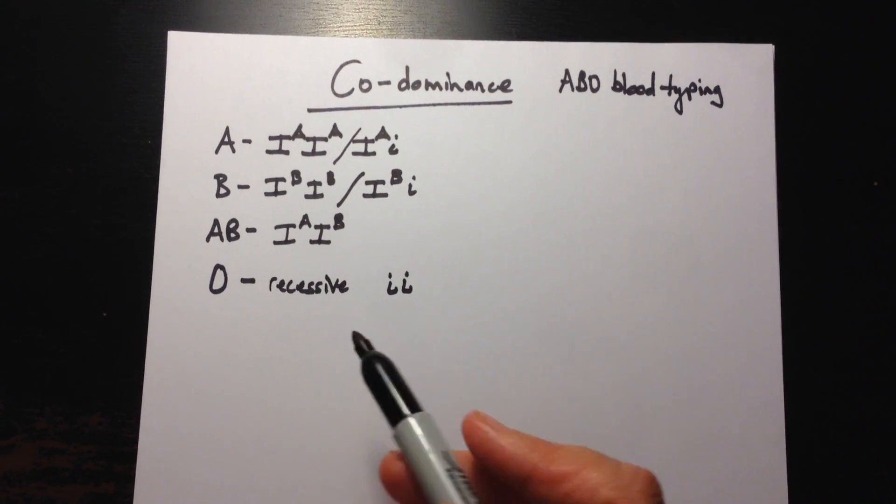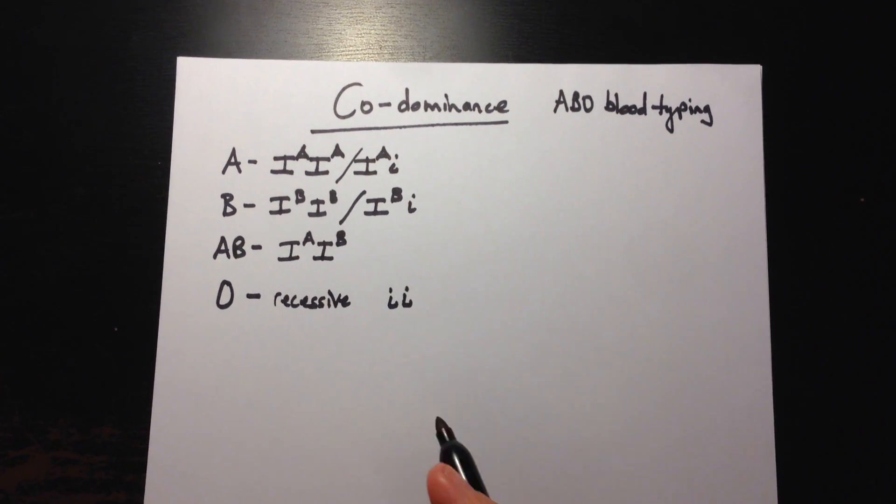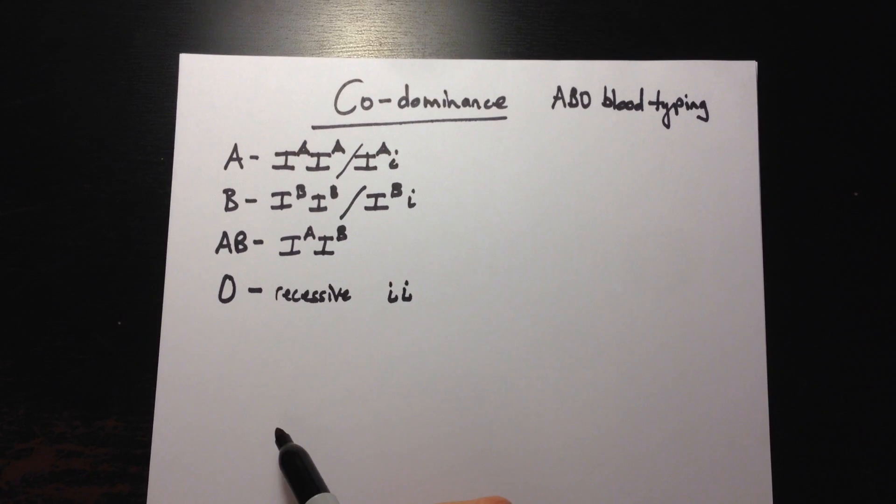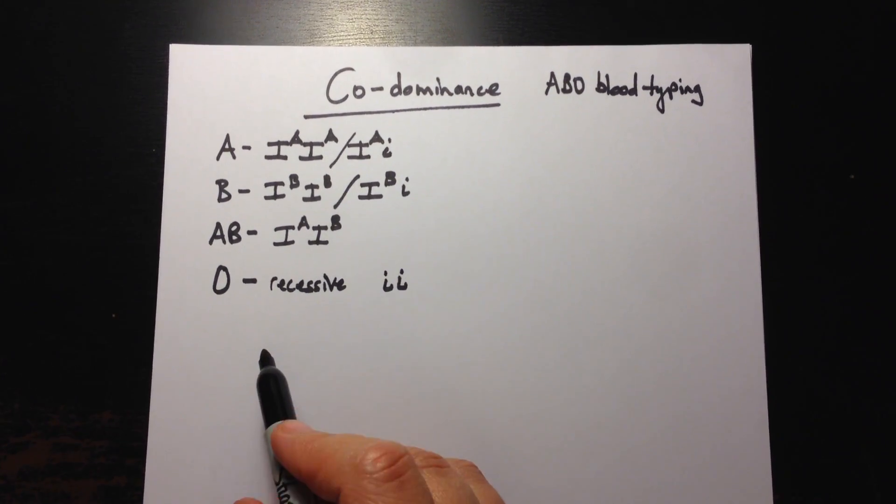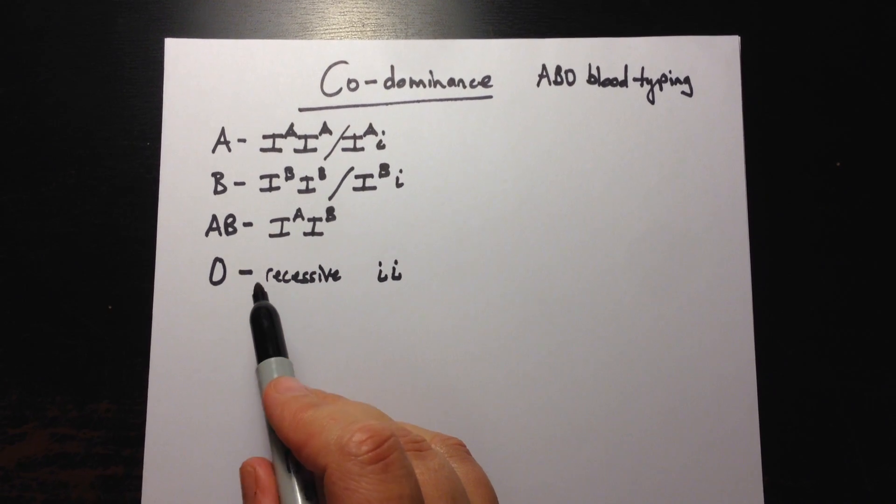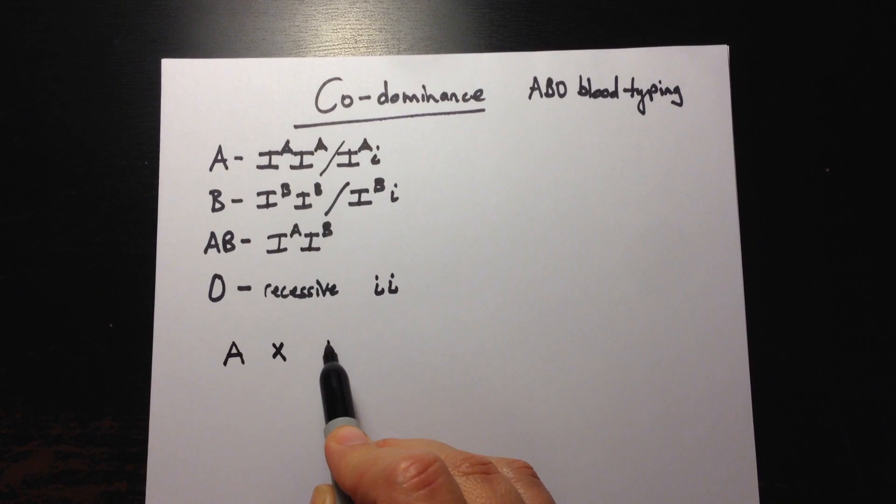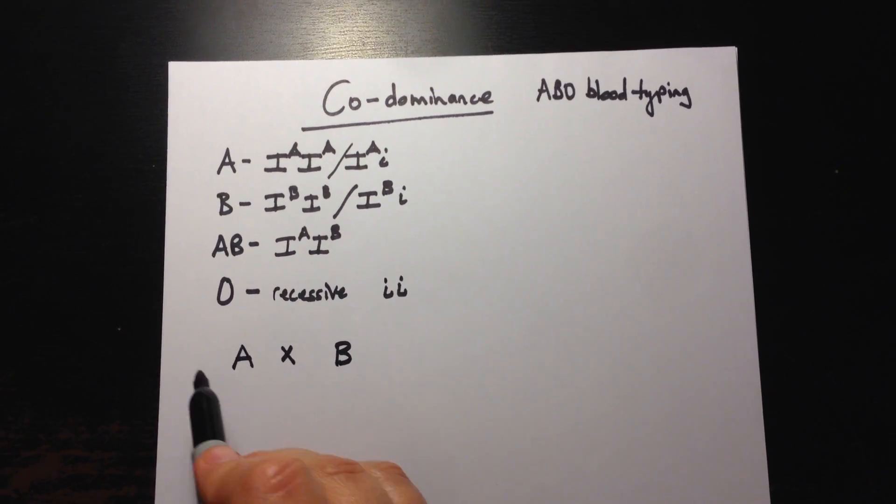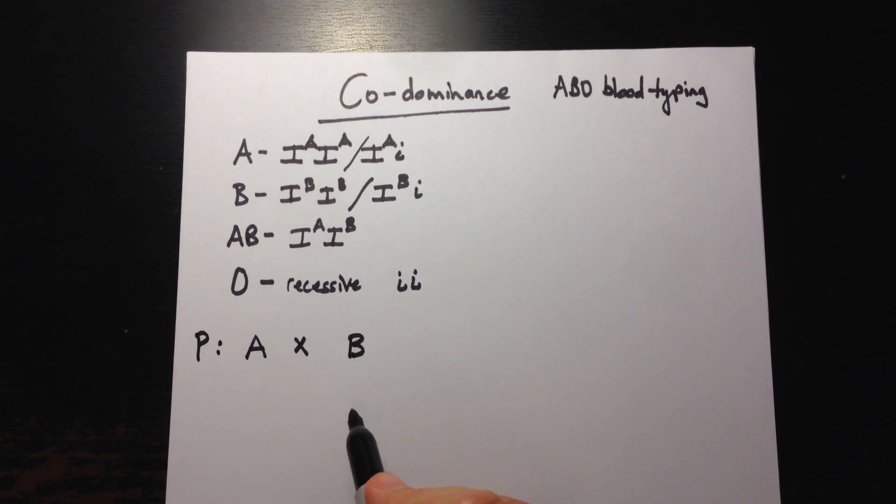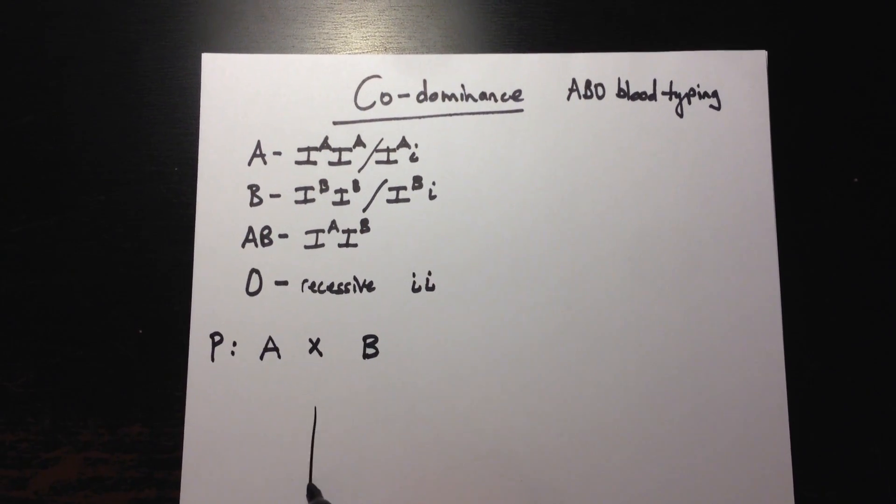So if you want to study the inheritance pattern of blood types, you need to do a couple parent crosses to show what possible blood types the children can inherit. So let's start and we cross type A blood with type B blood in the parent generation and this is going to be a monohybrid cross type of Punnett that we're going to draw.